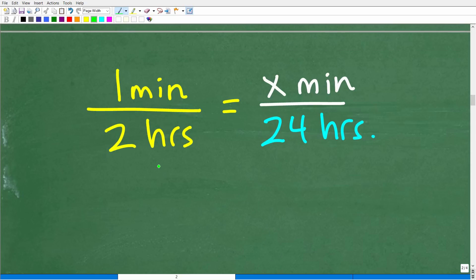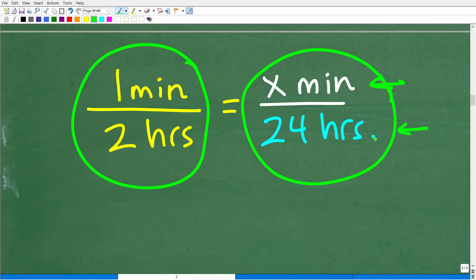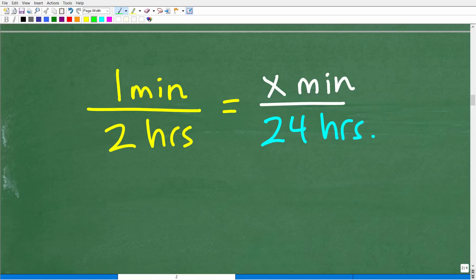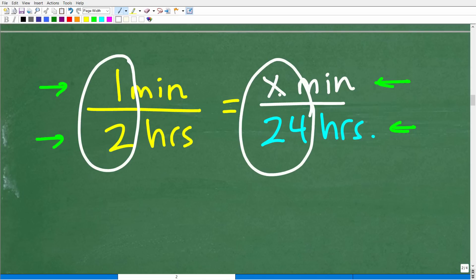A proportion is two equal fractions, rates, or ratios. But let's get back to this problem. We know that the clock loses one minute for every two hours. So we want to determine how many minutes is it going to lose in a full day or 24 hours. Now, we have to be very careful with the units of measure here because I'm setting up one fraction that's equal to another fraction. And notice I have minutes in the numerator and hours in the denominator. Let's think of this in terms of a simple proportion. I have one half here equal to x over 24.